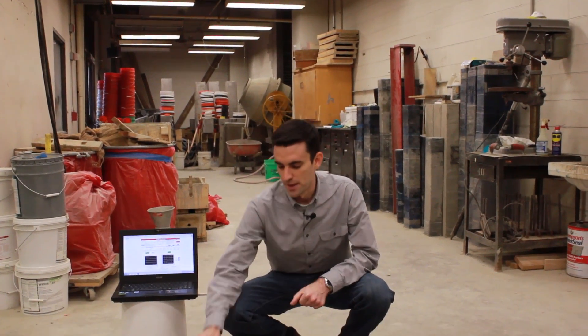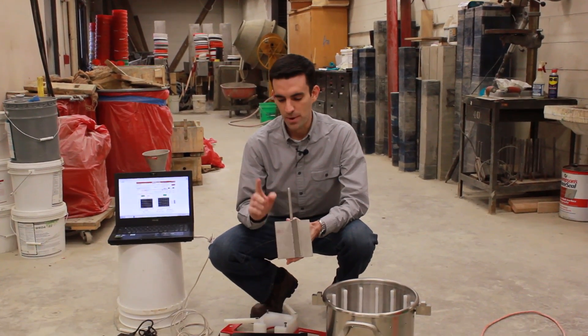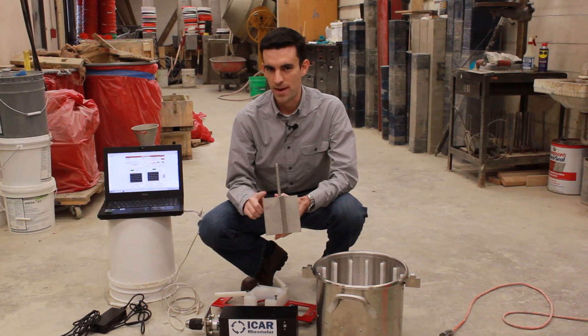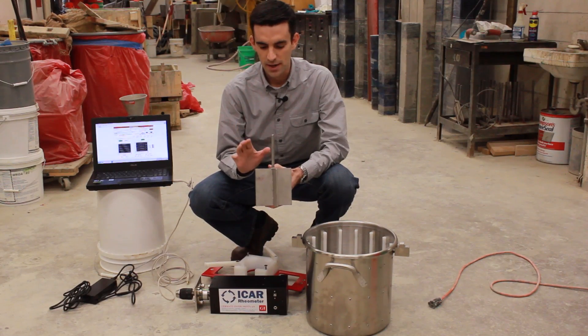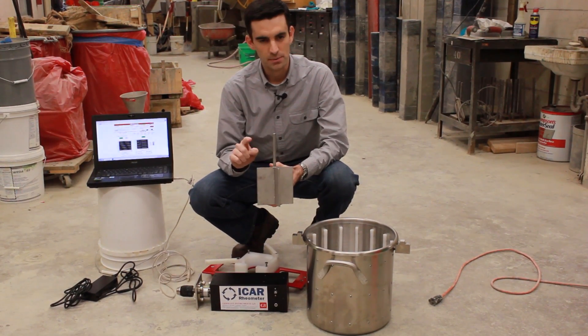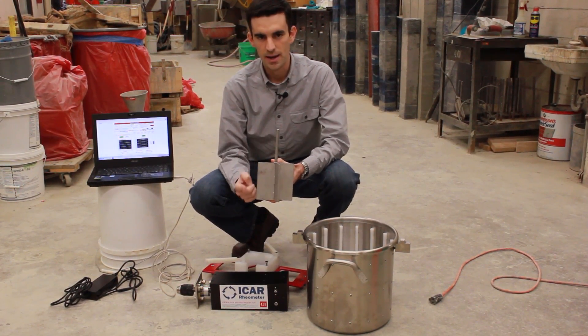The rheometer is based on a vane geometry. We measure the amount of torque acting on the vane as it rotates at different speeds. We always use the same size vane. It's 125 millimeters in both diameter and in height.